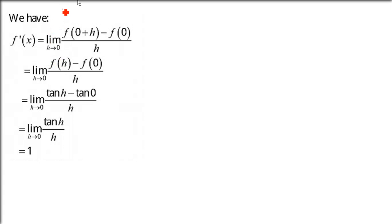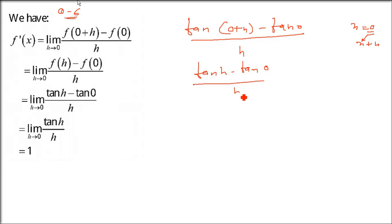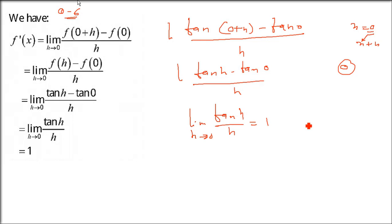Question 6: f(x) = tan x at x = 0. Using first principle: tan(0+h) - tan(0) by h, limit h→0. tan(0) = 0, so this simplifies to tan h / h. Since tan h / h → 1 as h→0, the answer is 1.